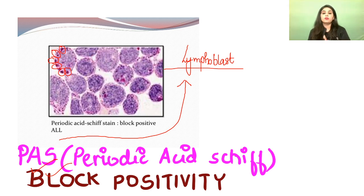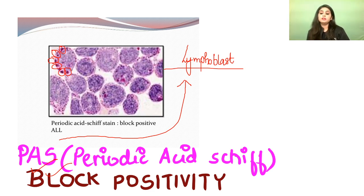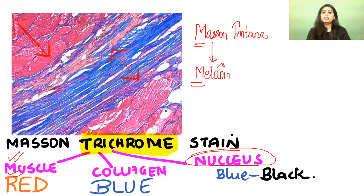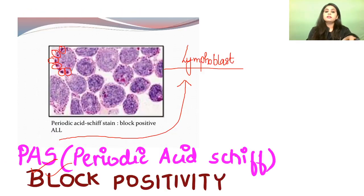Is there another blast in the hematological series where PAS gives a different pattern? It gives a diffuse positivity in an erythroblast. So remember: for lymphoblast, PAS gives block positivity; for erythroblast, PAS gives diffuse positivity.